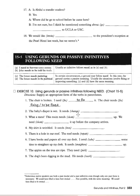'The baby's diaper is wet — it needs to be changed.' If it's urgent: 'It needs changing now.' 'What a mess — the room needs cleaning up. We need to clean it up before the company arrives.' 'My shirt is wrinkled — it needs to be ironed.' 'There is a hole in our roof — the roof needs repairing,' or 'the roof needs to be repaired.' 'I have books and papers all over my desk — it really needs straightening up.' 'The apples on the tree are ripe — they need to be picked.' 'The dog's been digging in the mud — he needs washing,' or 'he needs to be washed.' It's a difference in emphasis and tone.